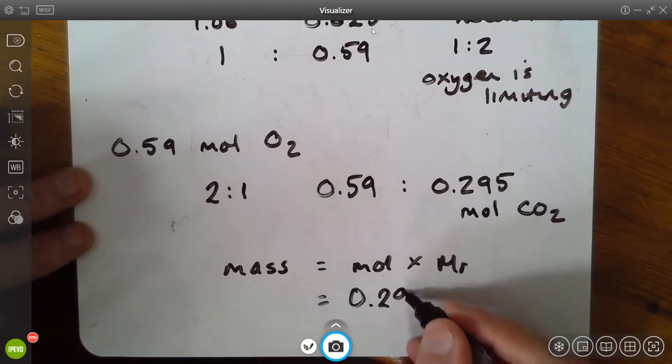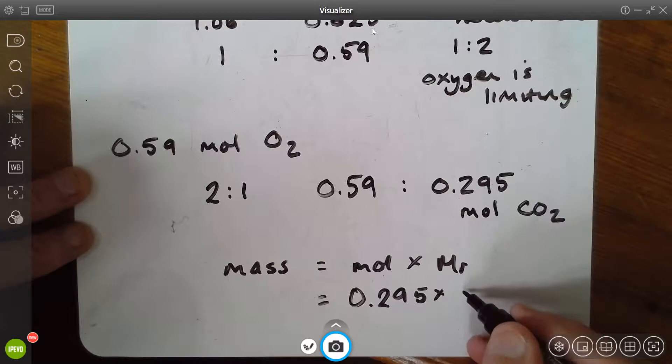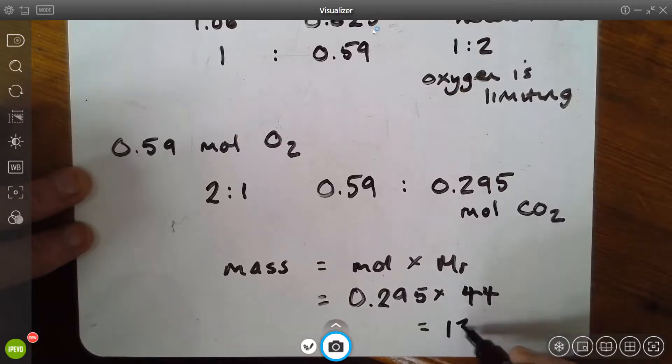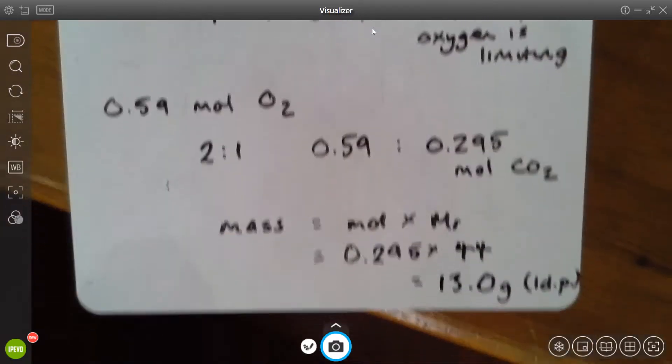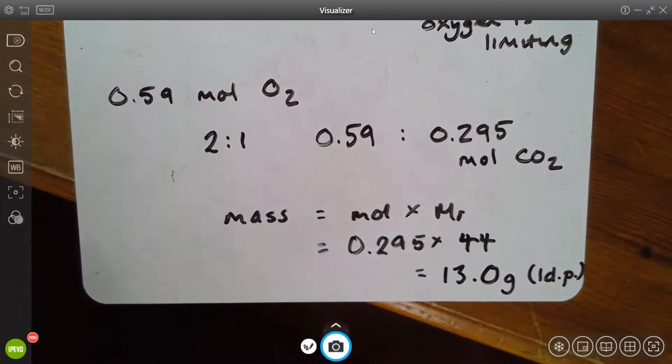So we'll plug those numbers in: 0.295 multiplied by the relative formula mass of carbon dioxide, and the relative formula mass of carbon dioxide is of course 44 units, so I multiply that by 84, and then we come up with a quantity of 13.0 grams to 1 decimal place. So well done if you got that far. If you're getting that far then you're easily looking at that grade 7, grade 8, grade 9 level of understanding, and if you've shown your working out like I have, that's going to stand you in good stead for not dropping marks.